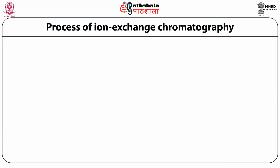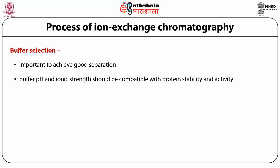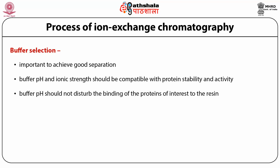The process of ion exchange chromatography can be divided into three parts: buffer selection, sample preparation and loading, and flow rate and elution. Buffer selection is important to achieve good separation. The buffer should be selected so that its ionic strength and pH are well matched with protein activity and stability. The pH should not disturb the binding of the protein of interest to the resin, and should not be so extreme that it interferes with elution or causes protein precipitation.